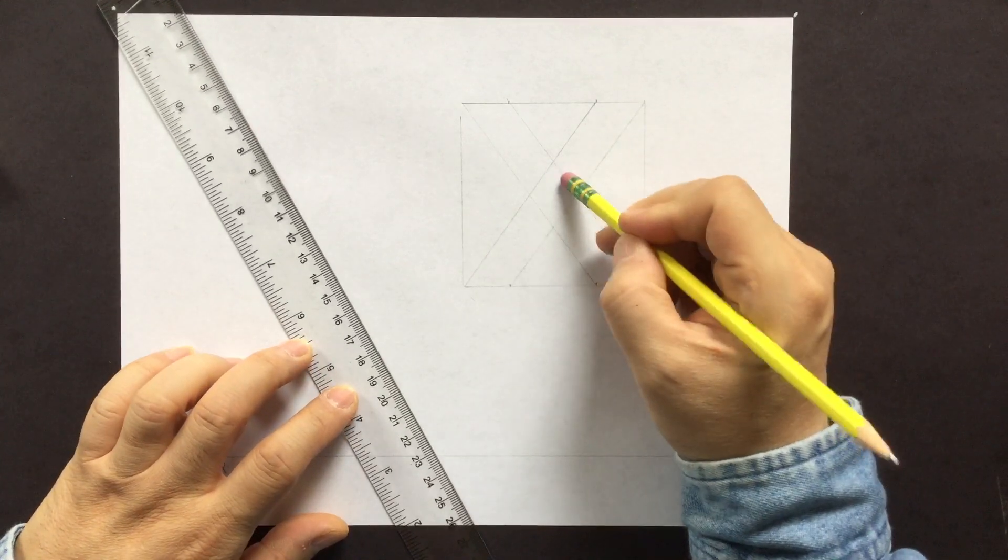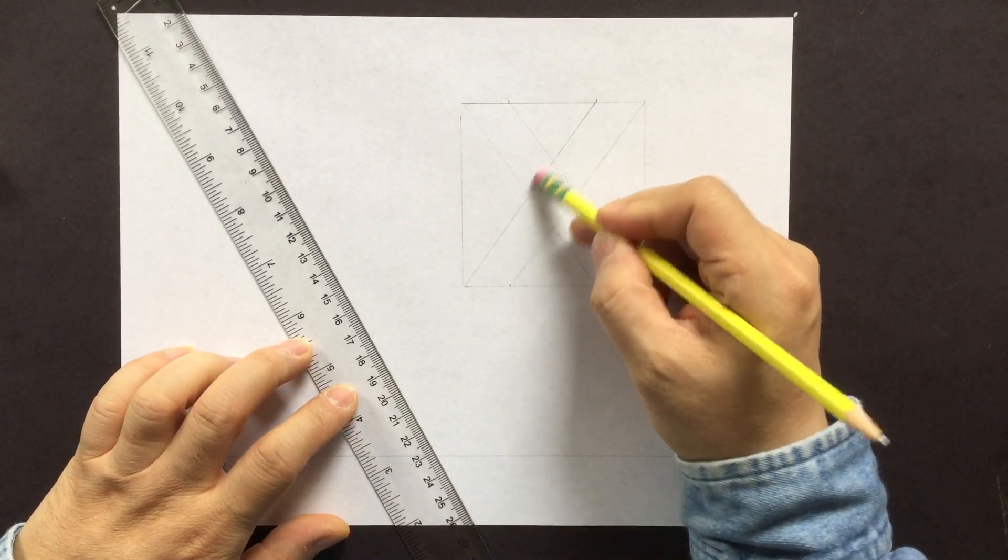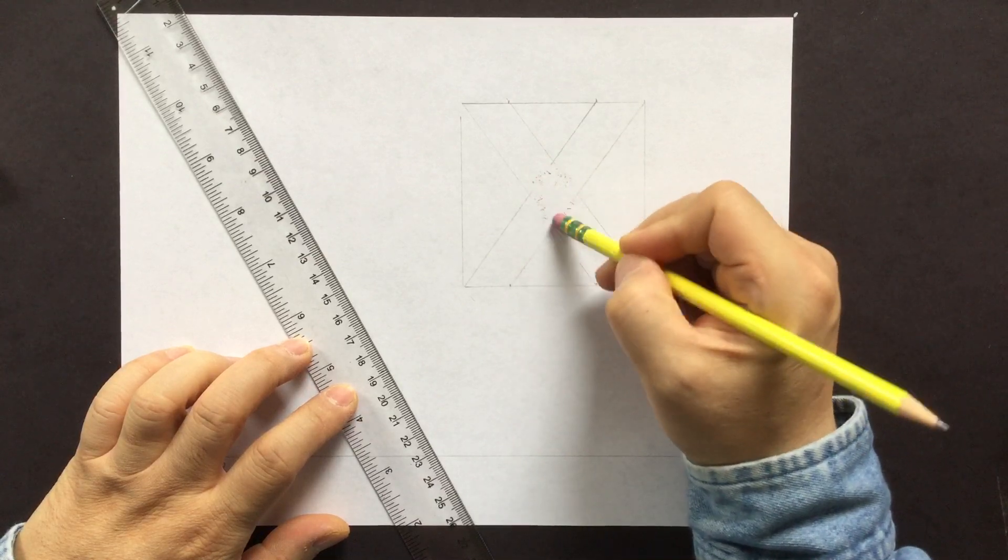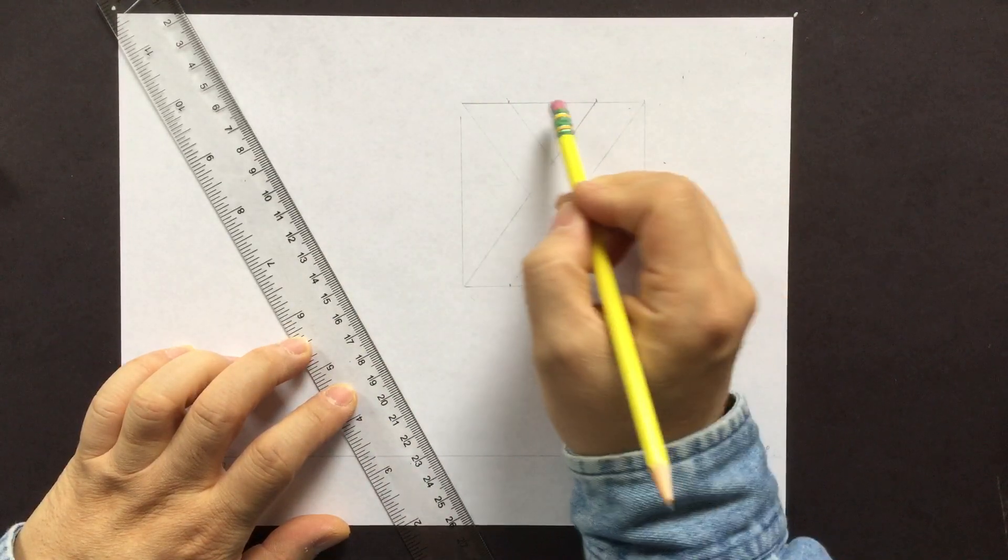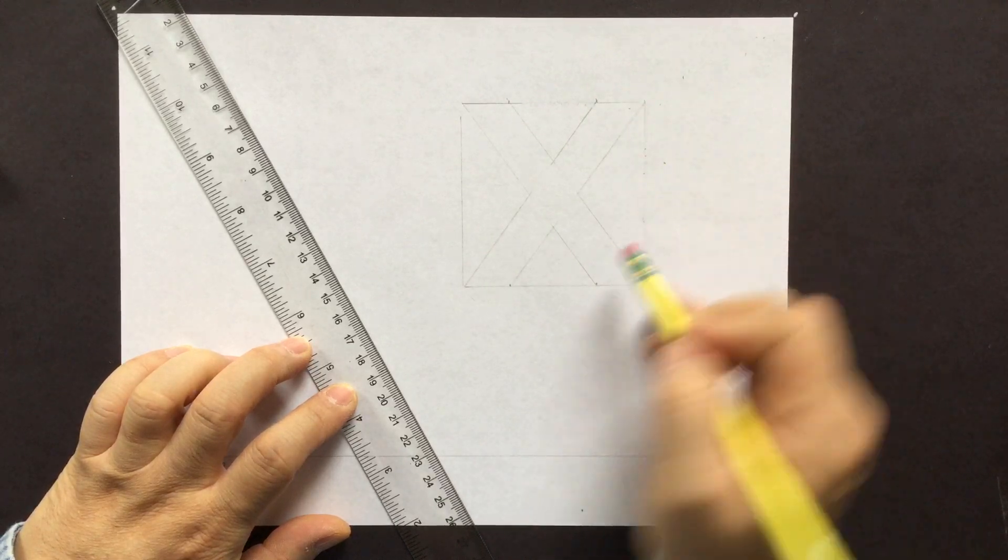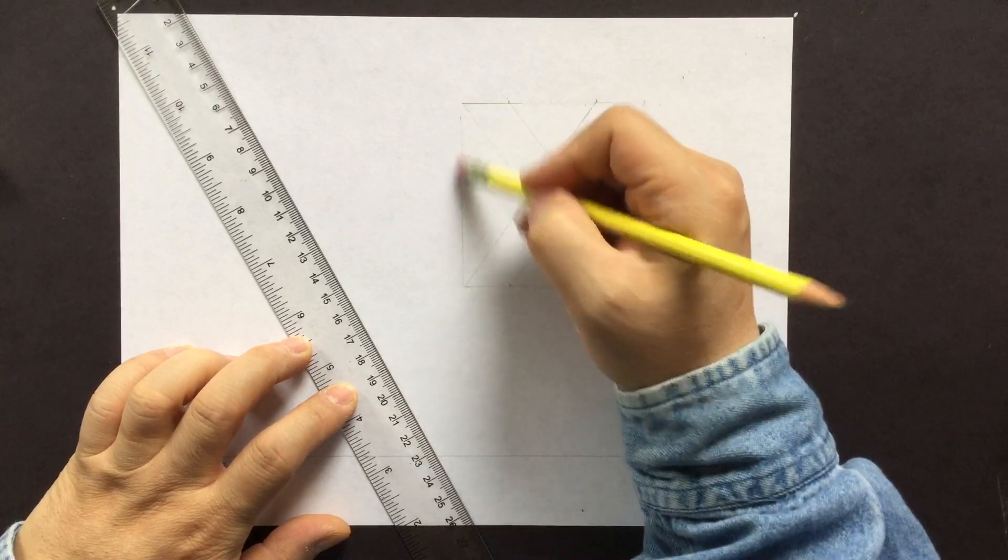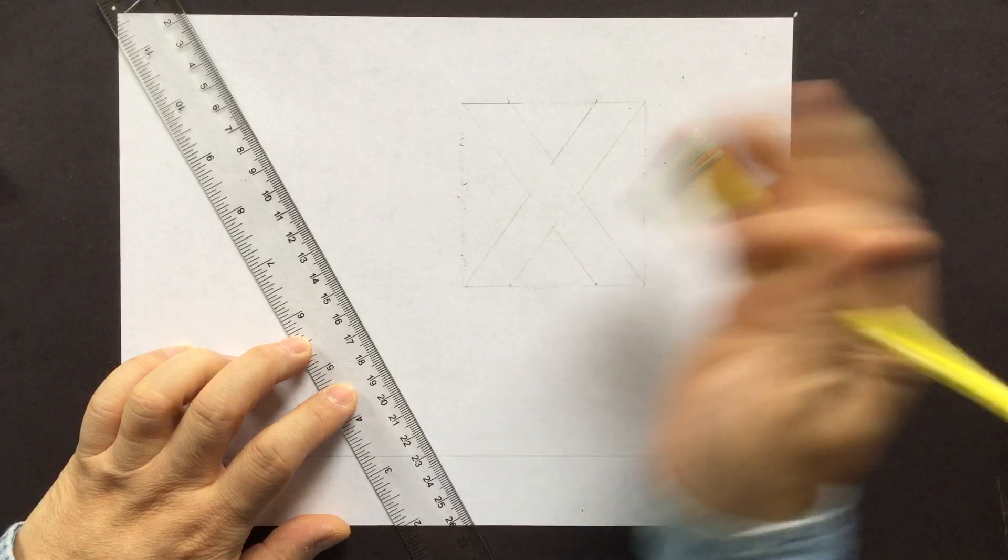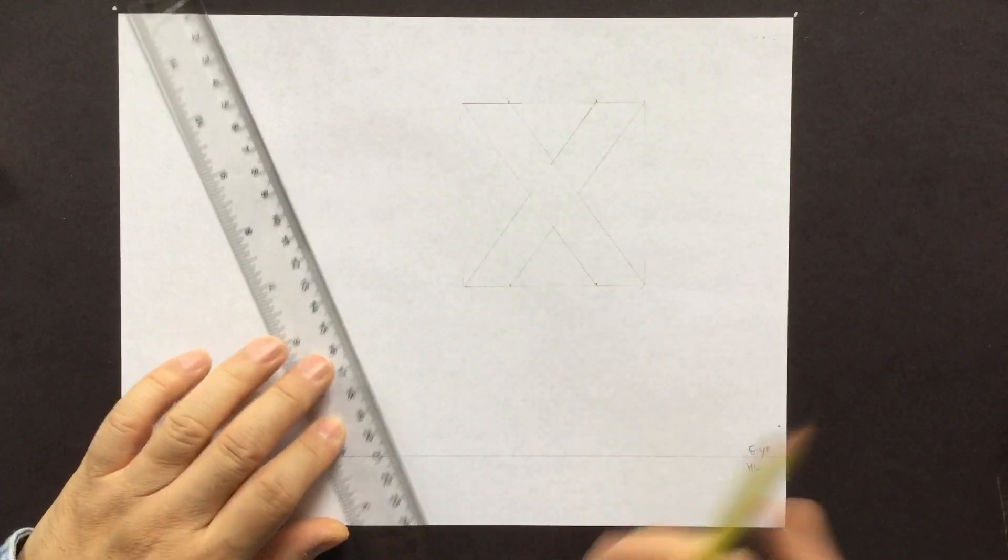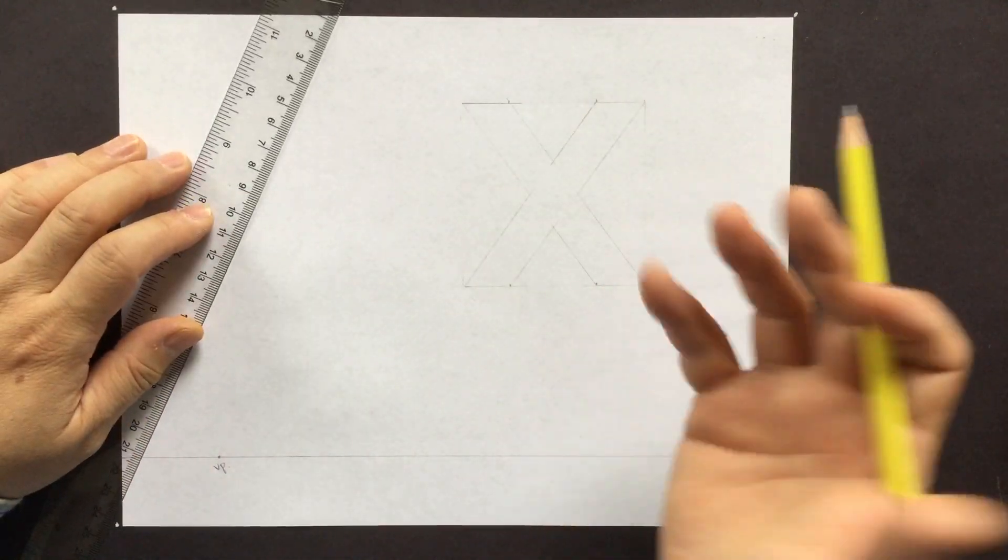So we don't need these lines anymore, so we erase these. We don't need those, we don't need that, we don't need these. Now all you have to do is start connecting the corners.